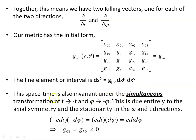This spacetime is invariant under the simultaneous transformation of t to −t (time reversal) and phi to −phi (direction reversal). This is due entirely to the axial symmetry and stationarity — the metric was independent of both phi and t. Under time reversal, −c dt, and direction reversal, −dφ, their product gives c dt dφ, so g₀₃ and g₃₀ are not zero because they are invariant under reversal.